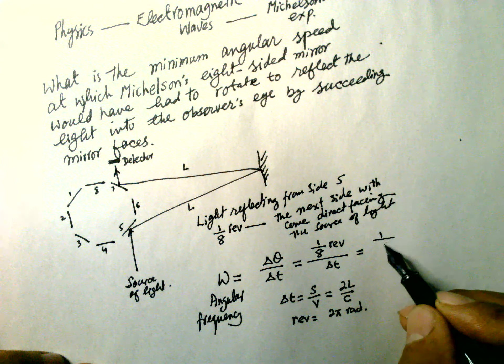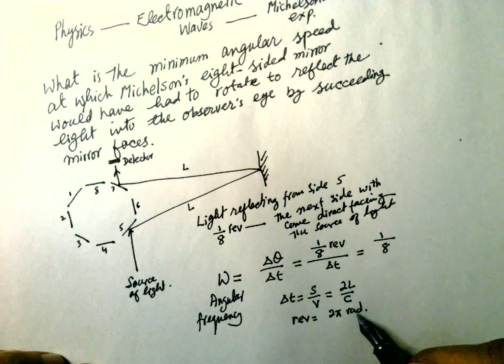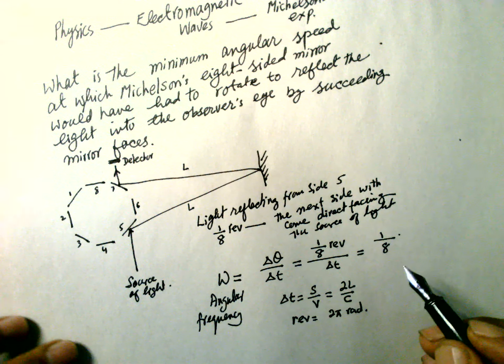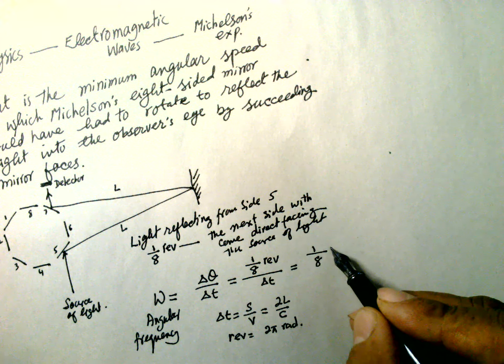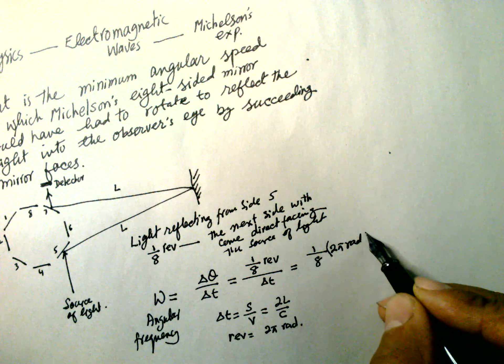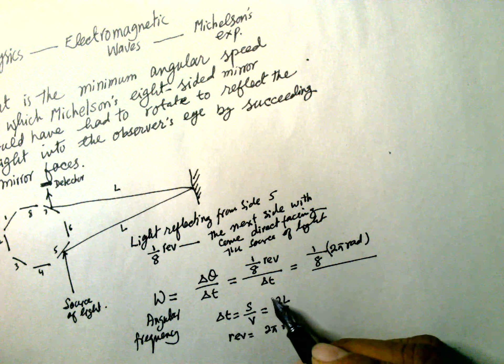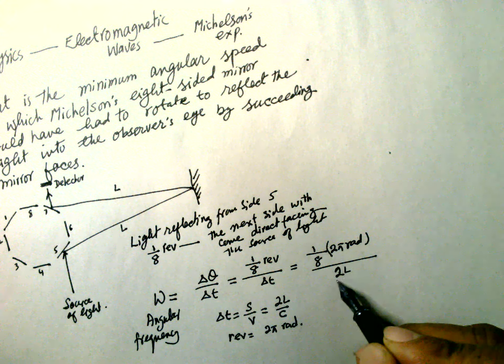So this is equal to one-eighth, and revolution is 2π radian. So this is one-eighth, 2π radian, over delta t, which is 2L over c.